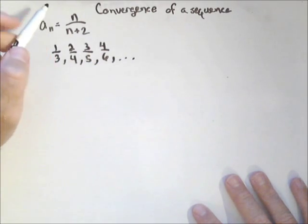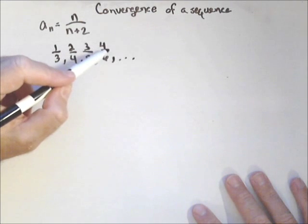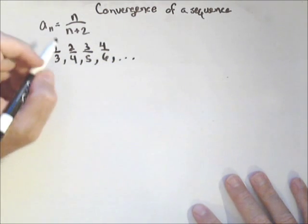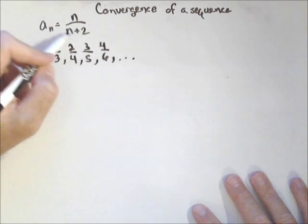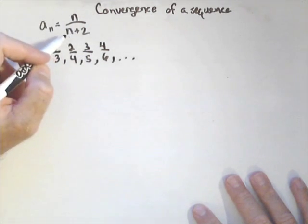And the question is to determine whether or not these terms converge to some single number. In order to determine convergence of a sequence, we need to see what happens as n gets infinitely large.